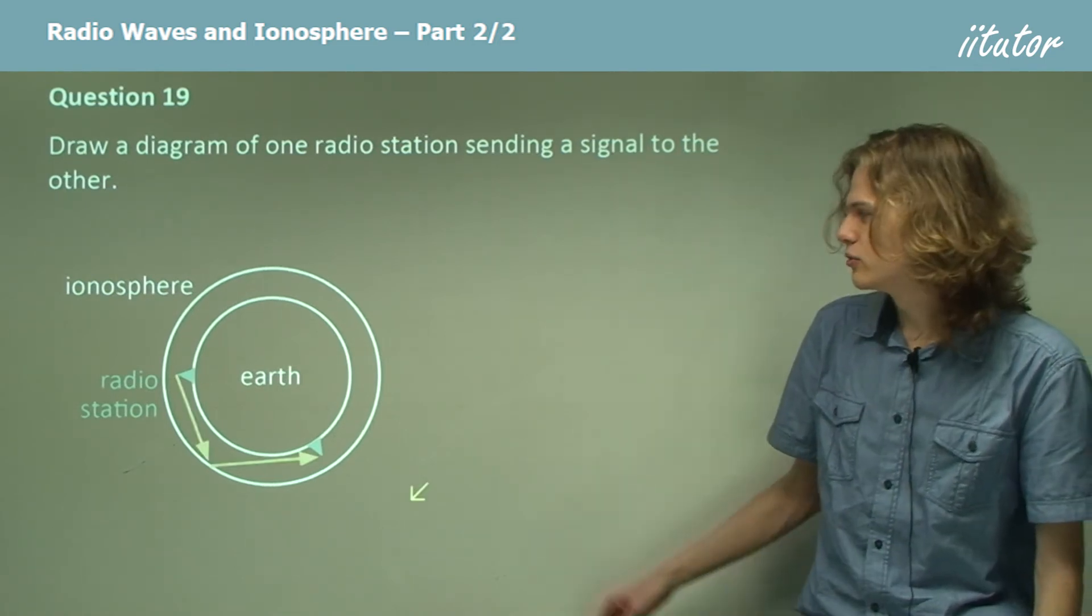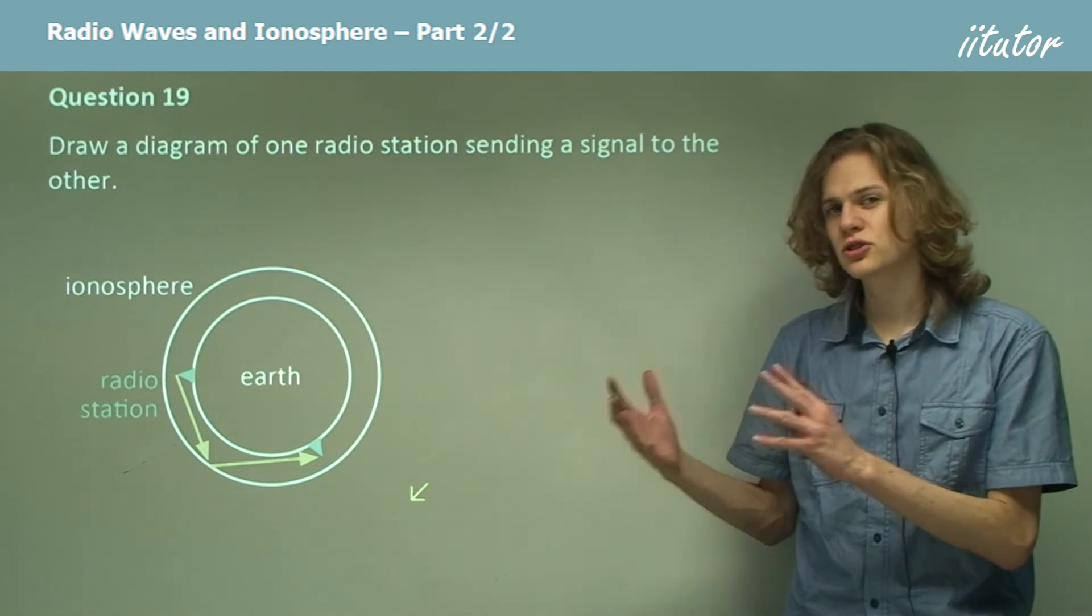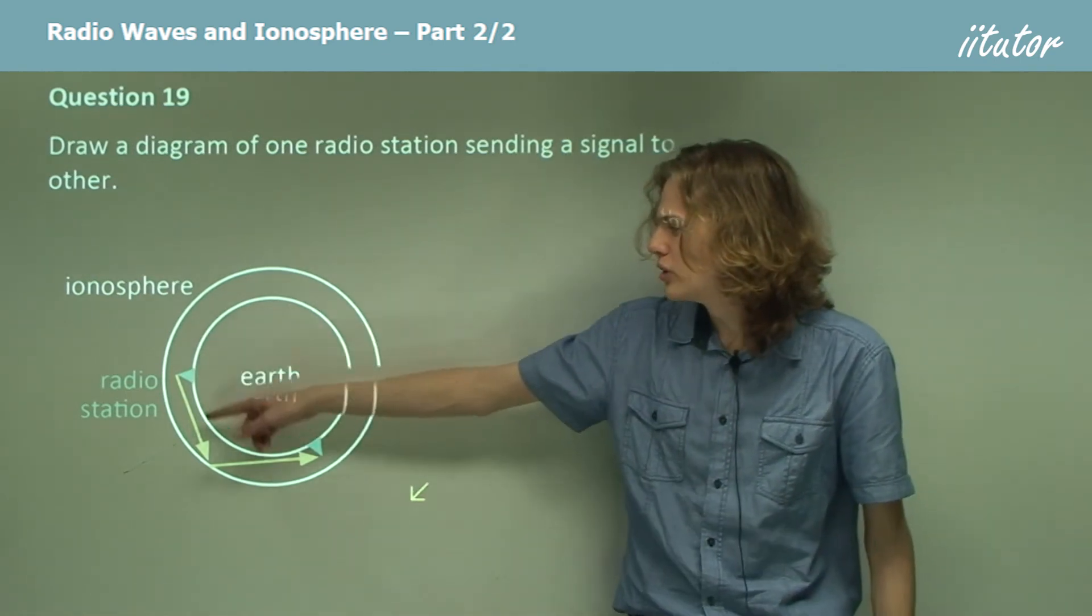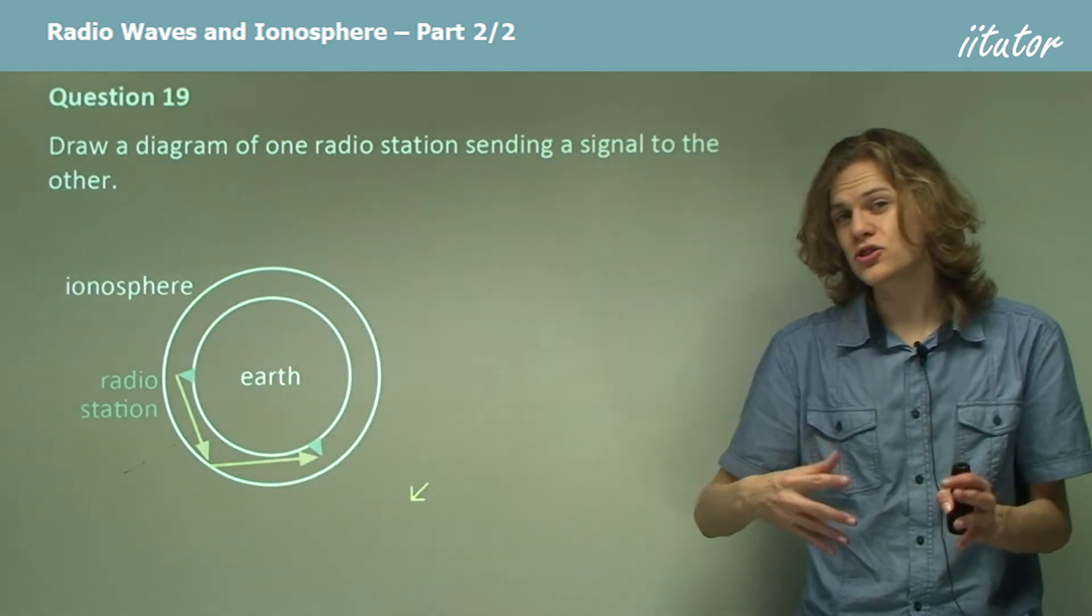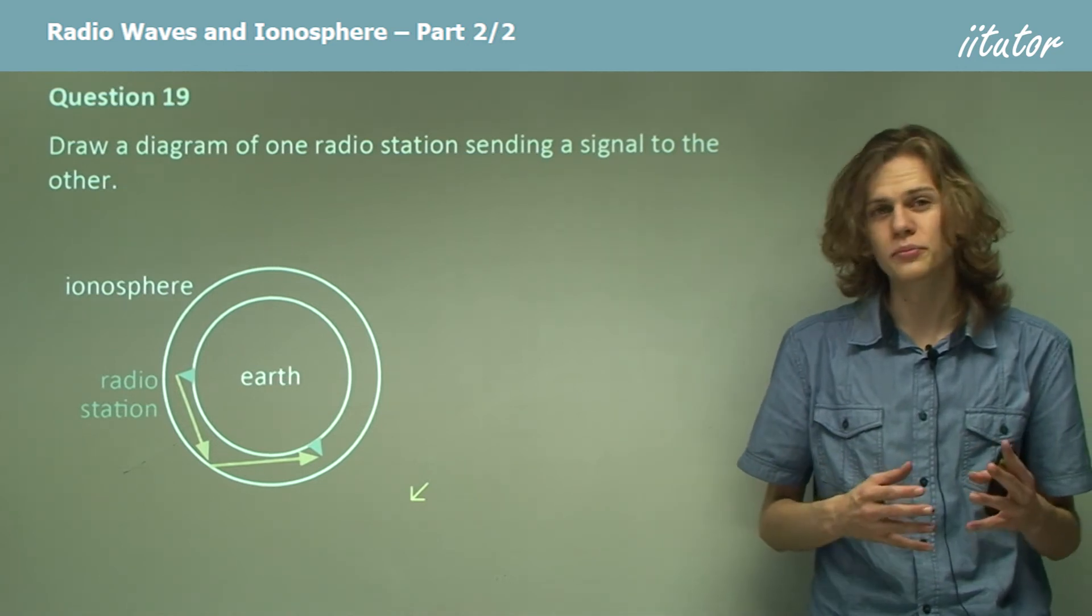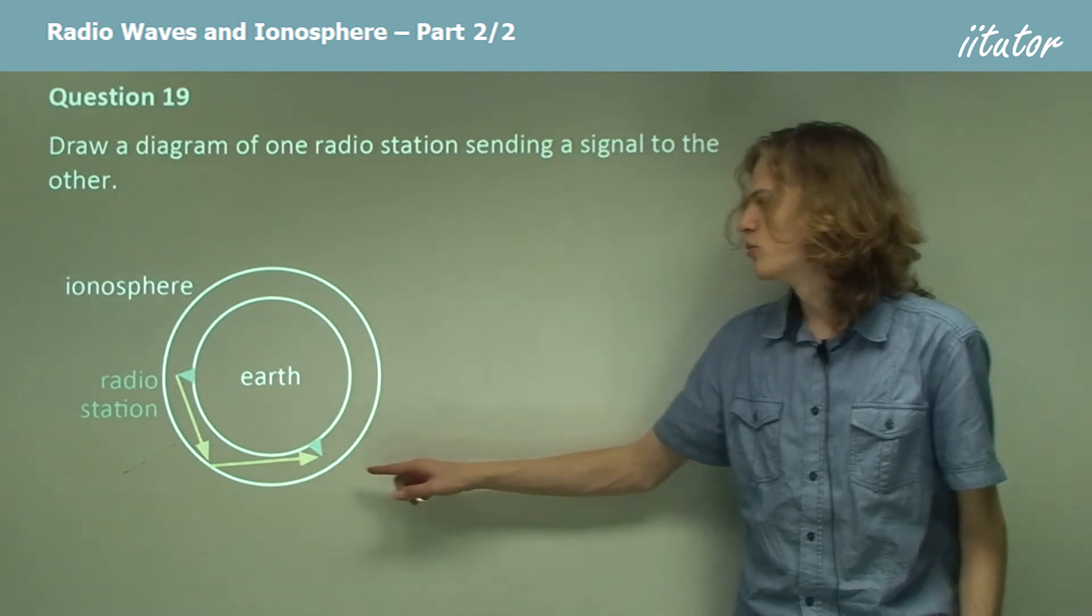So our diagram might look something like this. We can see that the radio station emits a radio signal that moves out towards space, this bounces off the ionosphere like a concave mirror and reaches the receiving station.